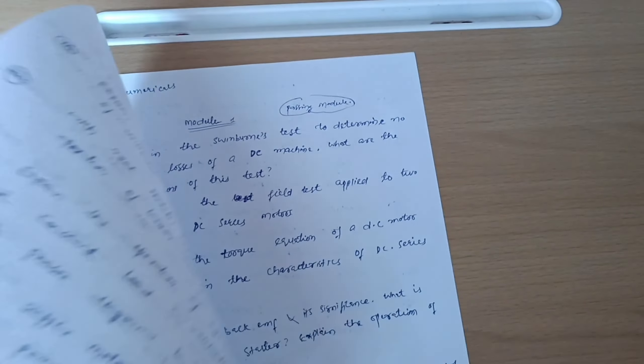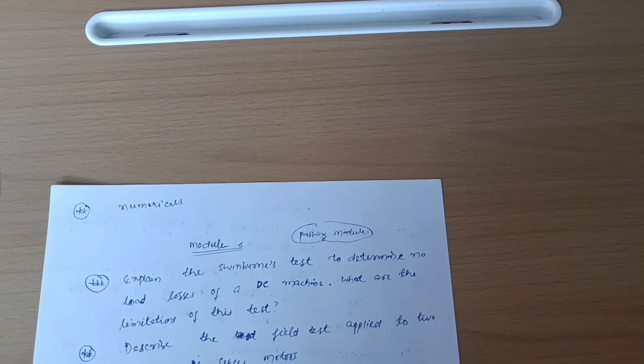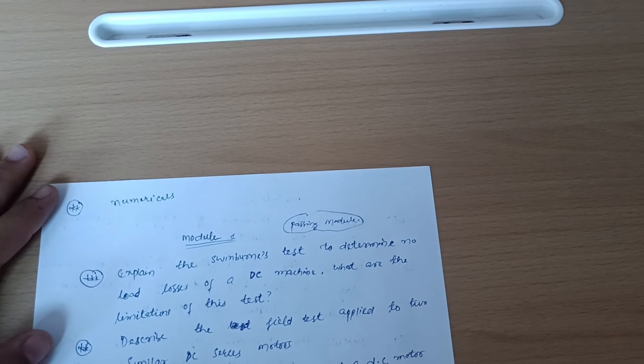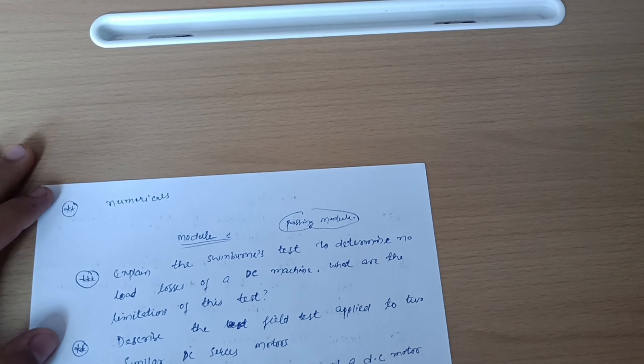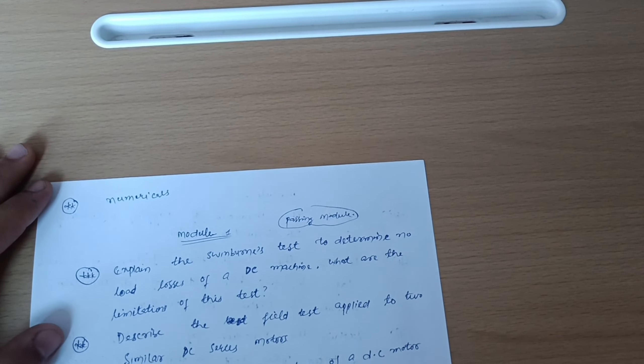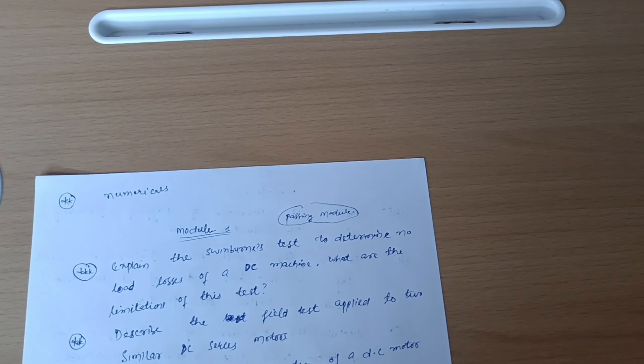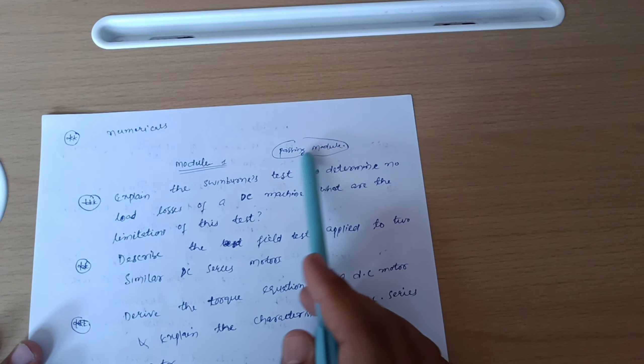As far as numericals are concerned, you should refer 18EE44 paper. You can search in Google itself, 18EE44, you will get the previous year papers. If you are unable to get other papers, I will upload all previous year question papers so that you can practice the numericals from Module 2, Module 1, and Module 3.